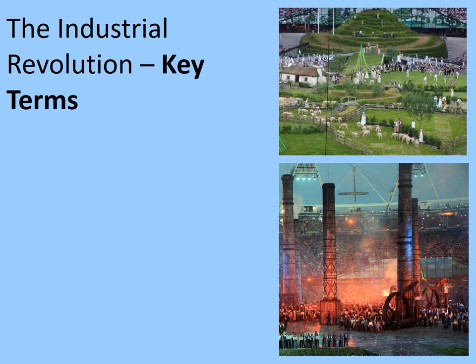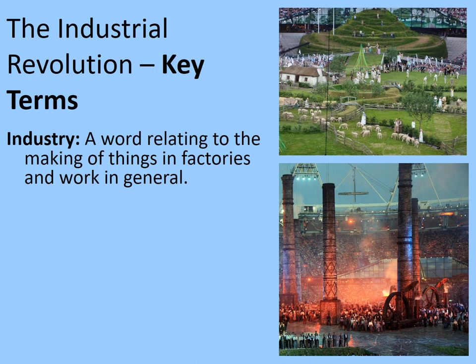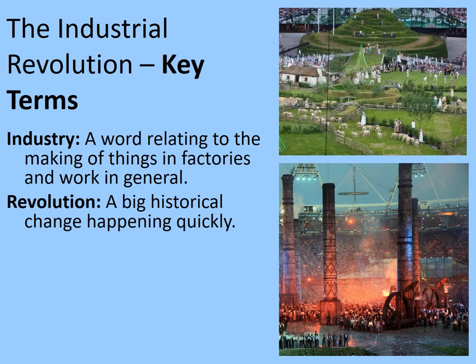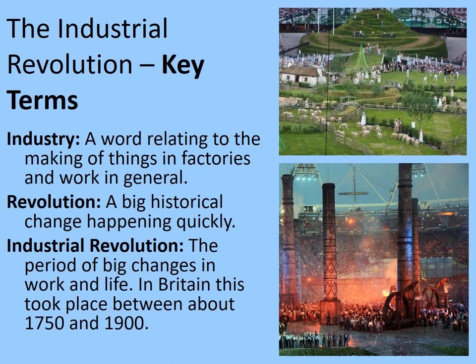Within just a few minutes, this had been torn apart and transformed into an industrial landscape. You can find the London 2012 Industrial Revolution set piece on YouTube. The entire thing lasts about half an hour and is incredibly impressive. This helps us understand how the Industrial Revolution is a revolution, even if it takes place across a period that seems quite long to us. Industry relates to the making of things in factories and work in general. A revolution is a big historical change happening quickly. So the Industrial Revolution is the period of big changes in work and life. In Britain, this took place between about 1750 and 1900, though arguably you might go back as far as the late 1600s for some of the earliest developments.